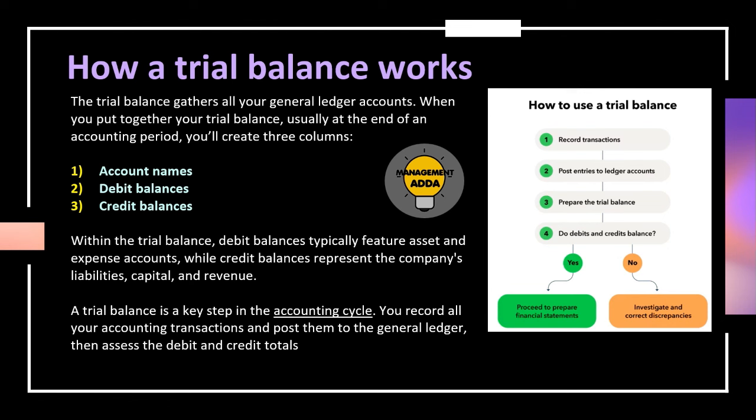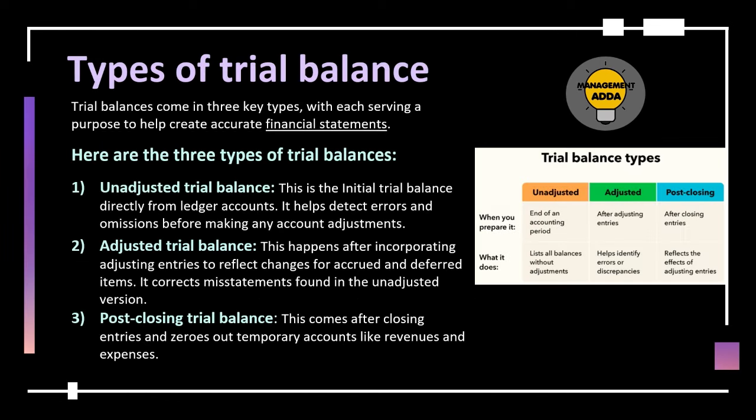The trial balance gathers all your general ledger accounts. When you put together your trial balance, usually at the end of an accounting period, you create three columns: first, account name; second, debit balances; and third, credit balances. Debit balances typically feature assets and expenses accounts, while credit balances represent the company's liabilities, capital, and revenue. A trial balance is a key step in the accounting cycle — you record all your accounting transactions, post them to the general ledger, and then sum the debit and credit totals.